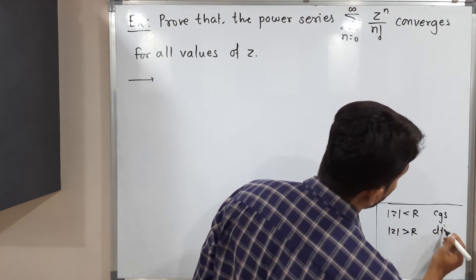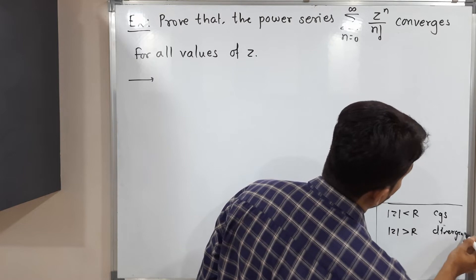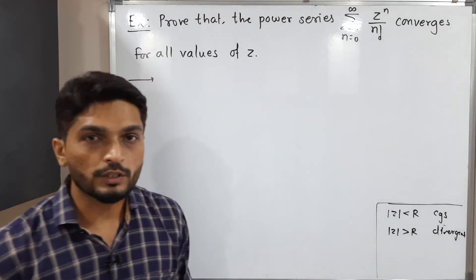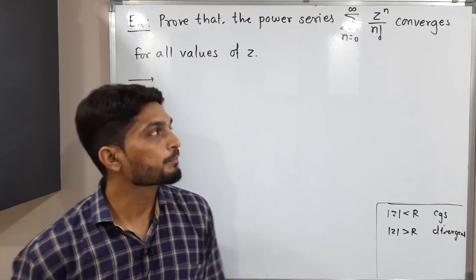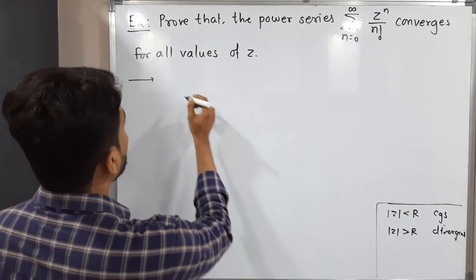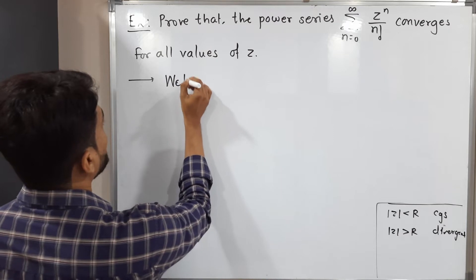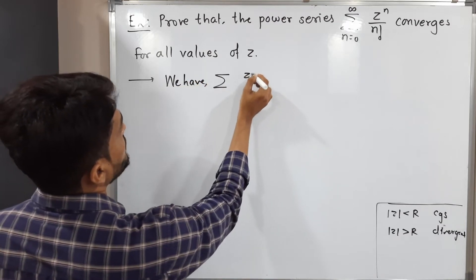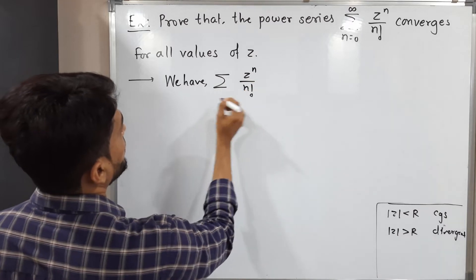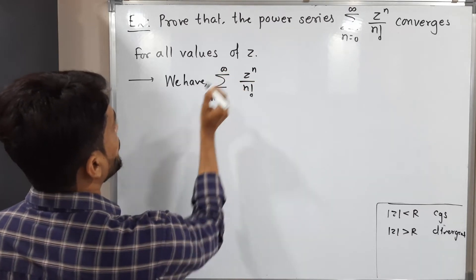So here also for this series we are going to find r, radius of convergence, and then we will decide. Let us write the given information. We have summation z raised to n upon n factorial, n running from 0 to infinity.